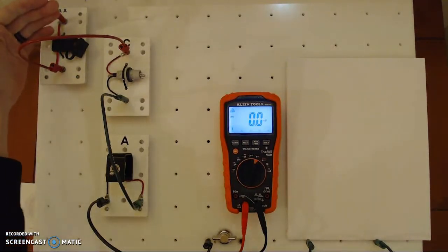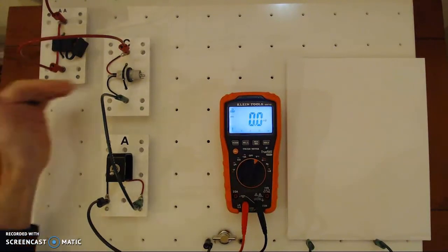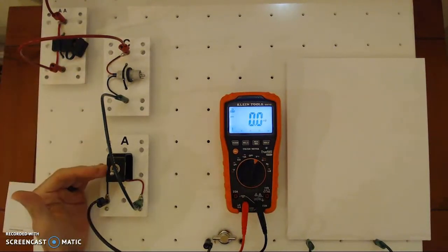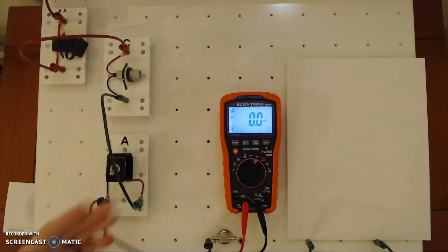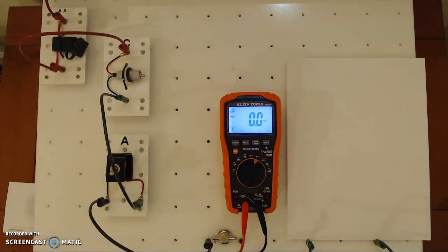Power source could be the battery, the alternator, circuit protection device, load, control device such as a switch we have here, and then of course the conductors in the circuit.